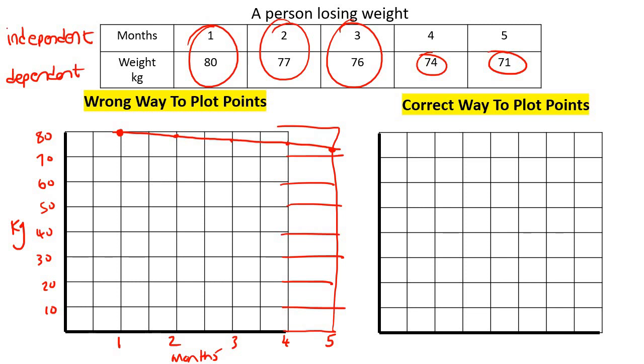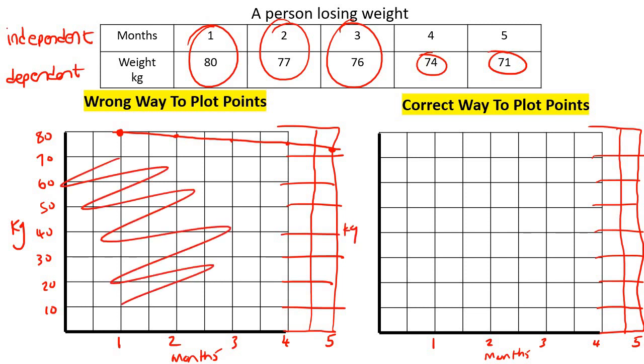Now, what if we did it this way? Check this out. So we're still going to keep the x-axis the same: 1, 2, 3, 4, and then we're just going to extend it over here, 5. Everything else is the same: months and then kilograms. But now, notice how we never used this part of the graph.